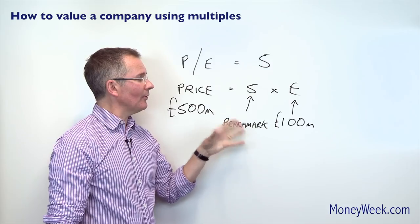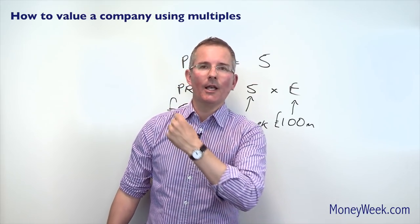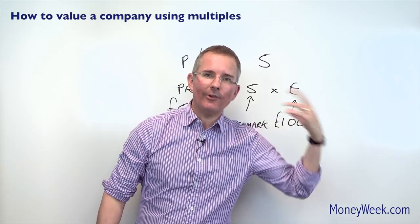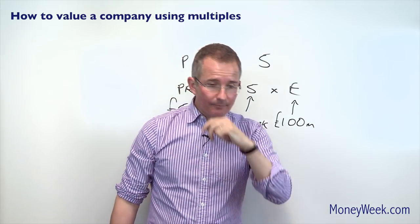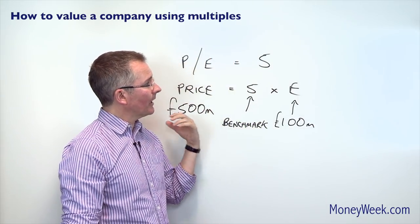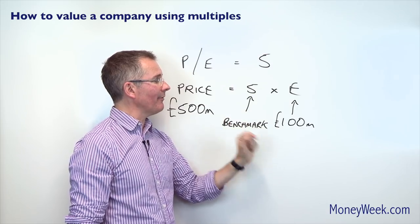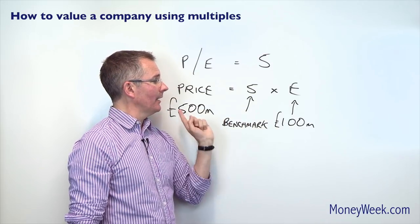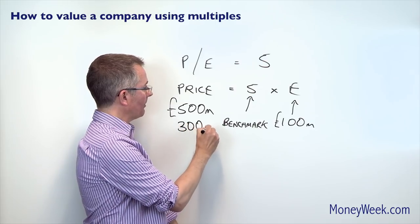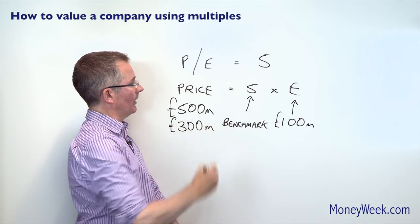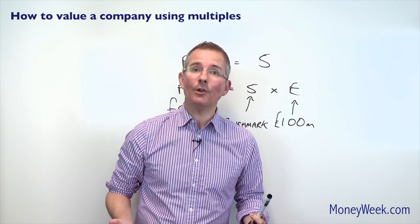You're saying this company is worth, using a quick comparative method looking at other companies, about £500 million. Now, who would that be useful to? It's clearly a very simplified method — no one would actually buy a company on this basis alone. But if you're an investor looking at a listed company and comparing it to peers with a P/E of 5, and the company has earnings of £100 million but trades at only a £300 million market cap, you might conclude it's cheaper than it should be and worth investigating further as potentially undervalued.